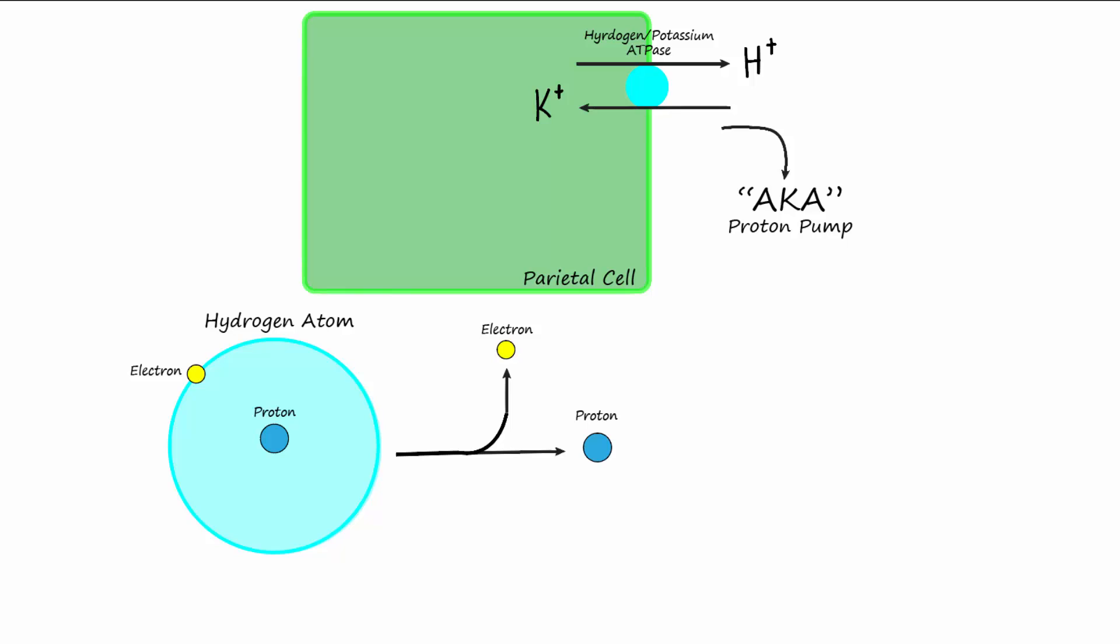Scientists have invented drugs that will directly block proton pumps, and they call these drugs proton pump inhibitors. A common proton pump inhibitor is Prilosec, which can be purchased over the counter without a prescription.